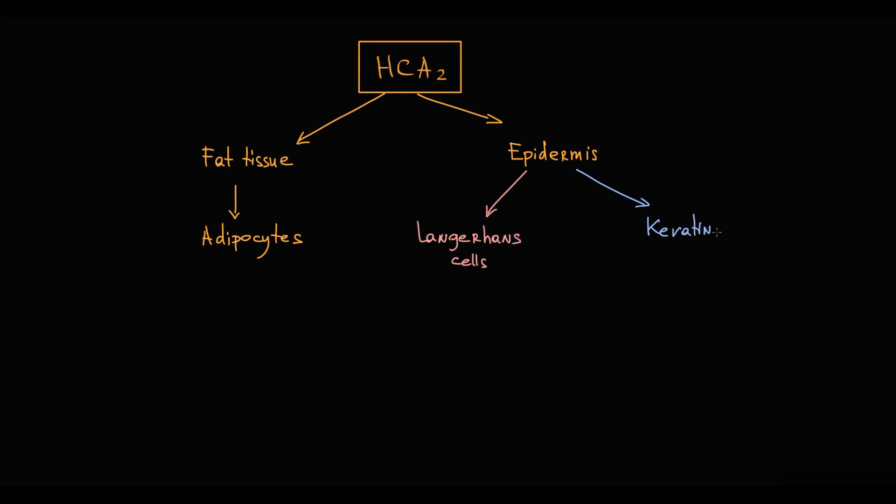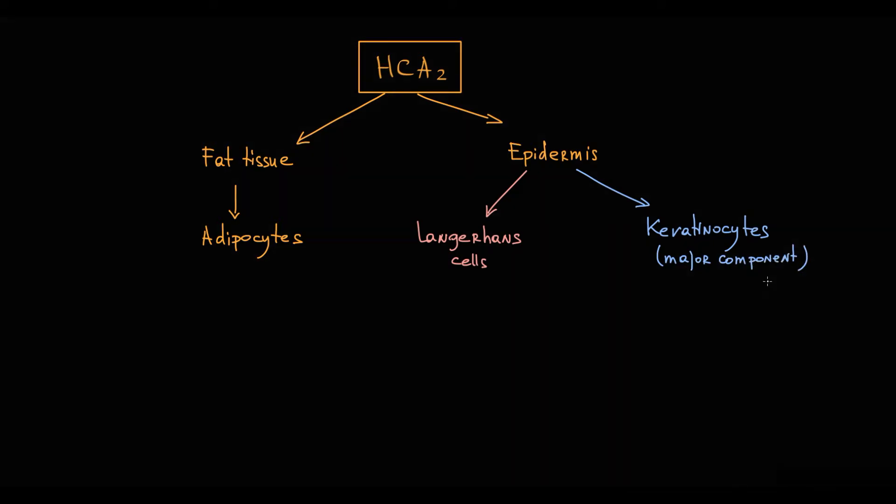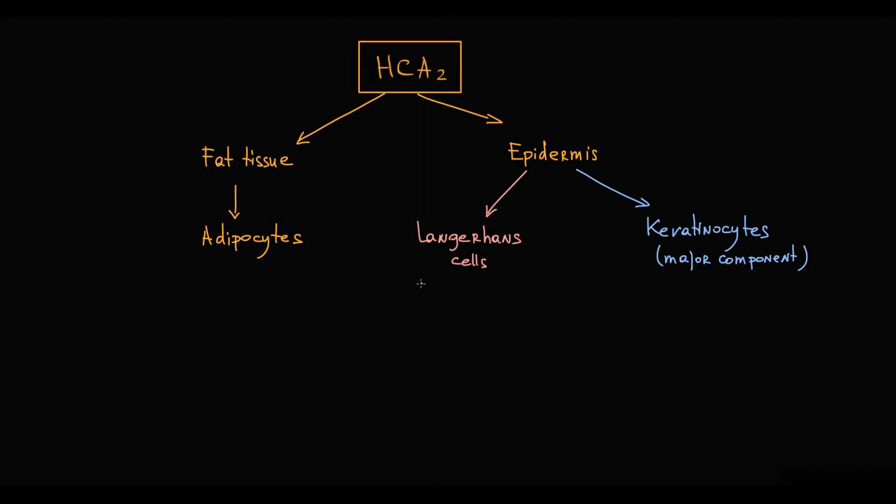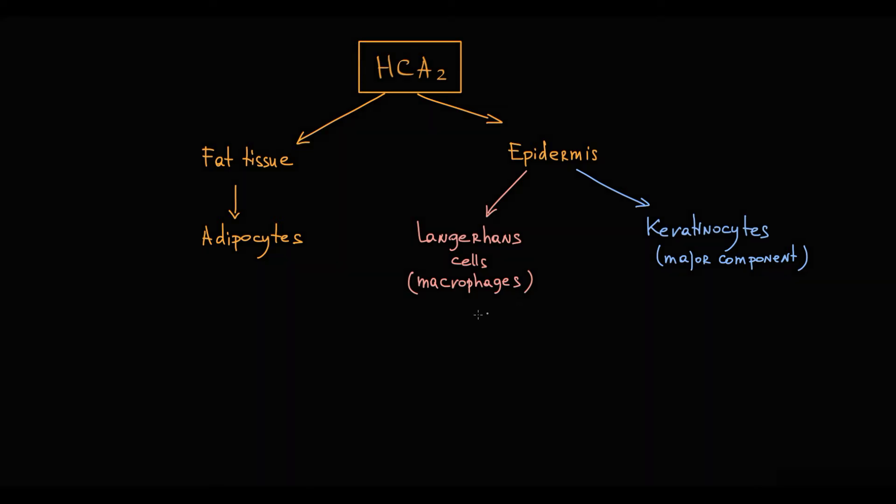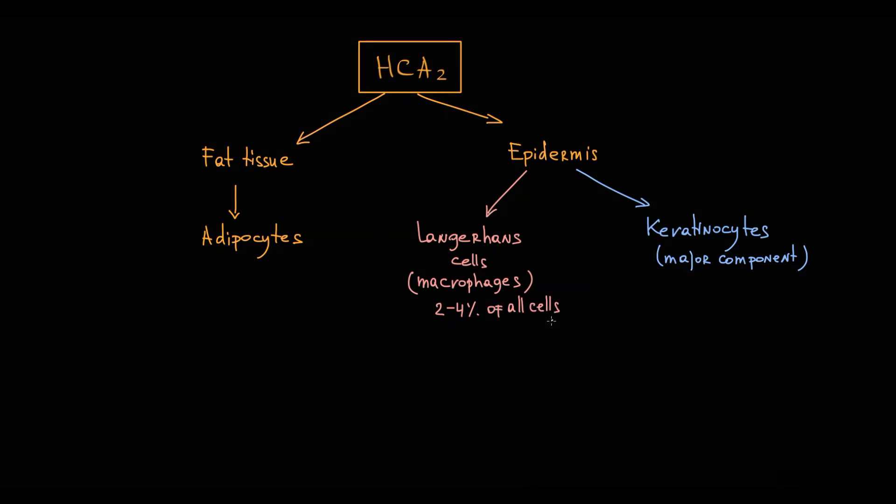Recall that epidermis consists mainly of keratinocytes arranged in stratified squamous epithelium. Epidermis also has its own macrophages called Langerhans cells. Langerhans cells are specialized epidermal dendritic cells that make approximately 2-4% of total cells in epidermis.